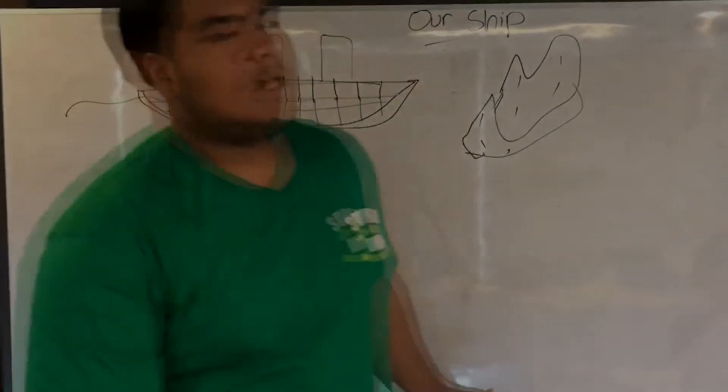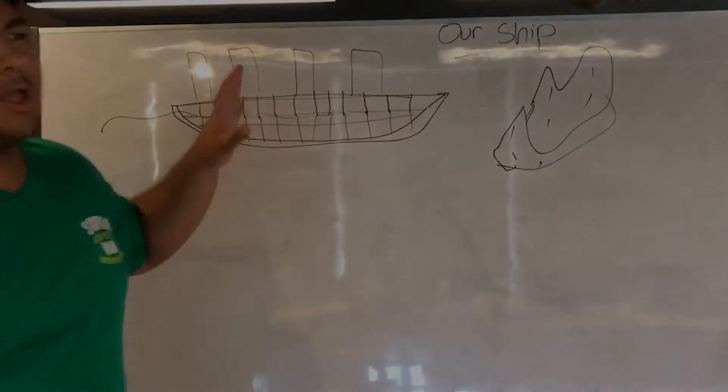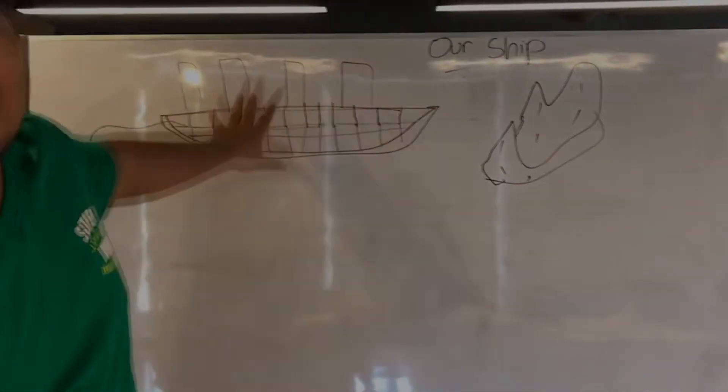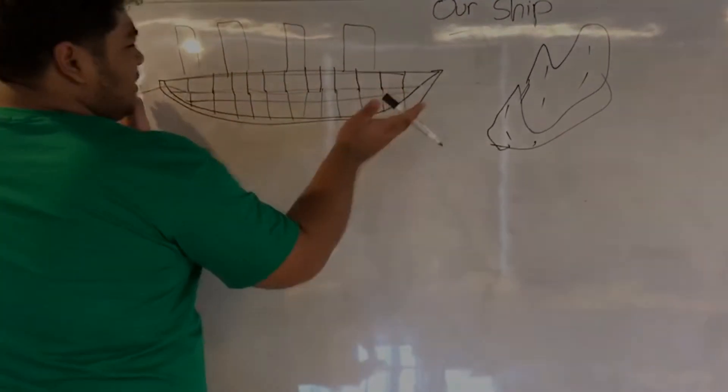After you understand all the concepts that's needed to keep the ship afloat, this is our ship itself. The diagram is not, this picture is not really what it looks like, it's just an approximation. So basically here is the ship itself.